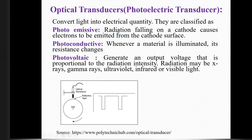In the photoemissive type, radiation falling on the cathode causes electrons to be emitted from the cathode surface. In photoconductive, when material is illuminated, its resistance changes. In photovoltaic, it generates an output voltage proportional to radiation intensity. Radiation may be X-rays, gamma rays, ultraviolet, infrared, or visible light.